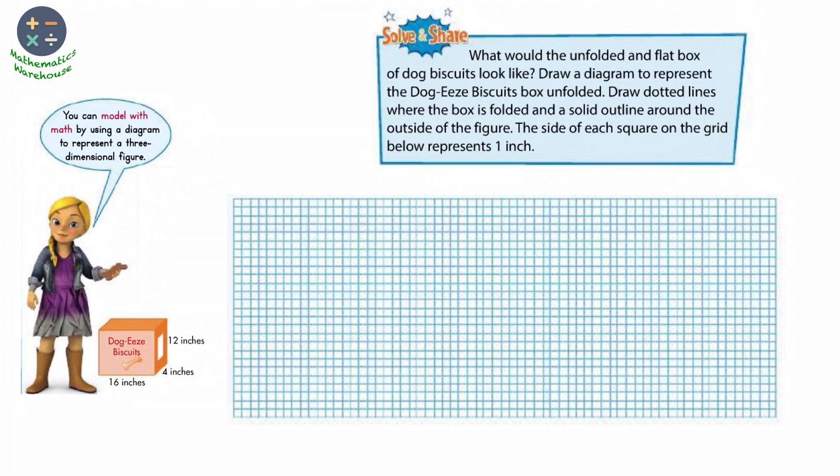First example, solve and share. What would the unfolded and flat box of dog biscuits look like? Here he wants me to draw a diagram to represent this unfolded box. If you notice here, this box is in the shape of a rectangular prism.